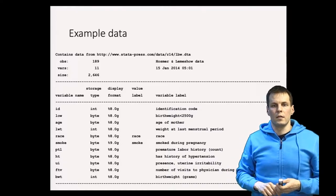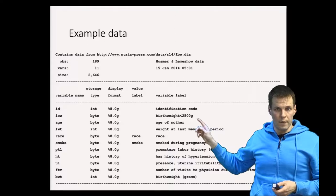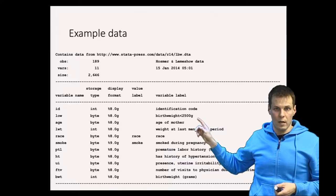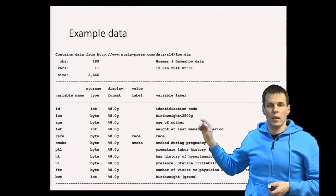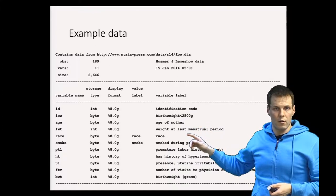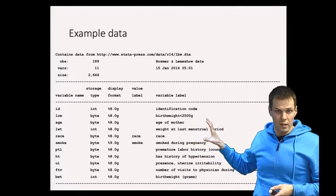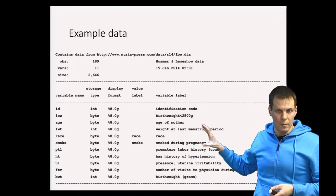The dependent variable is whether the baby was born as low birth weight, defined as less than two and a half kilos. We will be looking at the weight of the mother at last menstrual period, the race of the mother, and whether the mother smoked during pregnancy as our interesting independent variables.